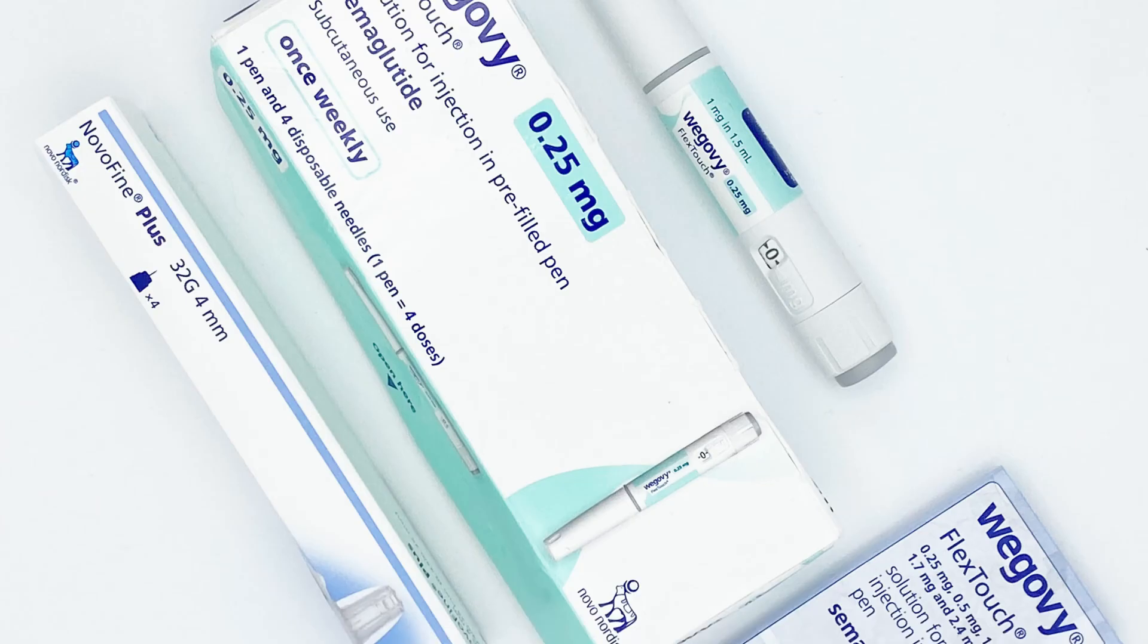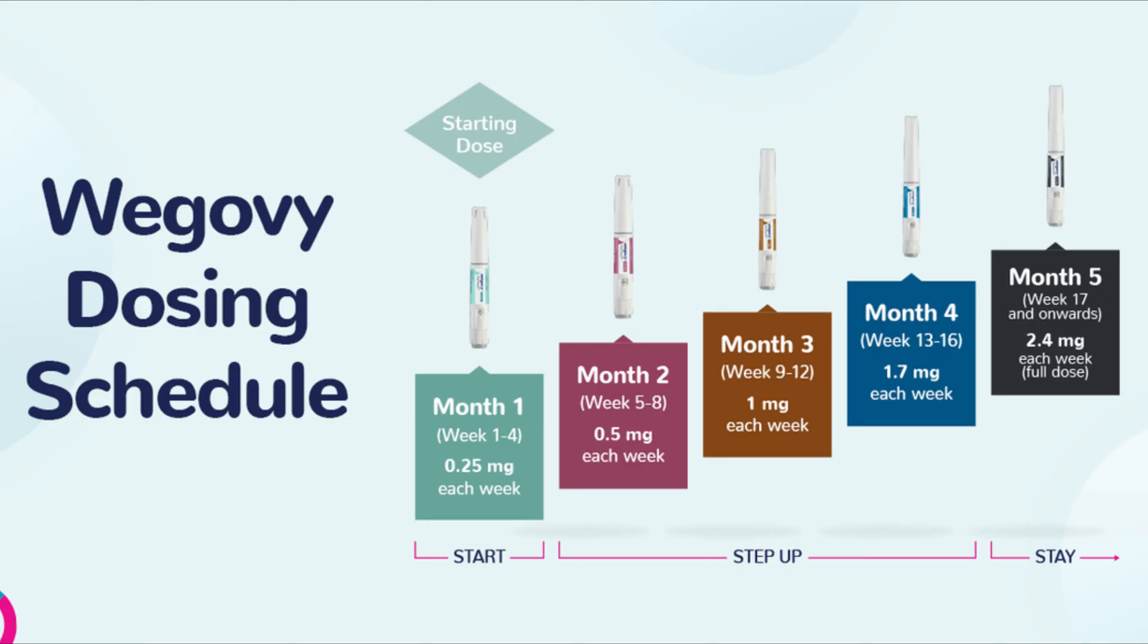Each Wegovy pack comes with one pen, four needles, and a patient information leaflet like you see here. You will use one pen each month. Each pen contains four doses which are injected once weekly. We'll talk more about the dosing later in the video.